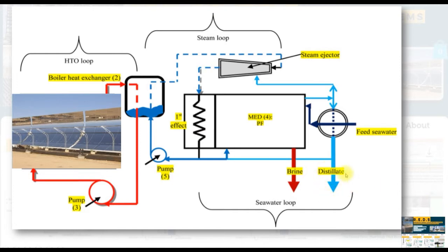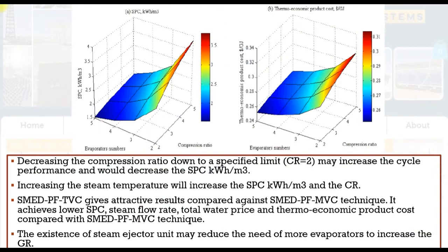We have to assign the distillate product, solar radiation inputs, top cycle temperature, and the compression ratio here in order to discover the rest of the data. If we are going based on performance analysis, decreasing compression ratio down to a specific limit — for example 2, since it's rated from 1.8 up to 6 — may increase the cycle performance and decrease the specific power consumption. Increasing steam temperature will increase the specific power consumption. Increasing number of effects will decrease the specific power consumption.